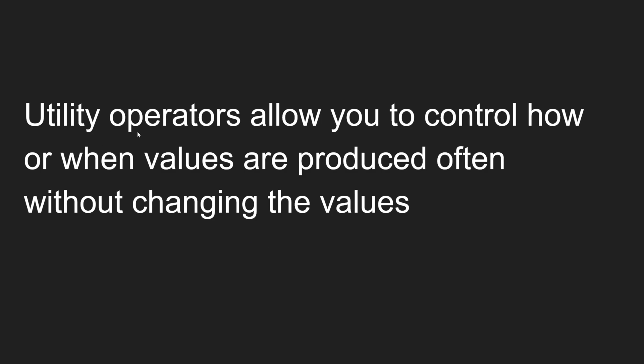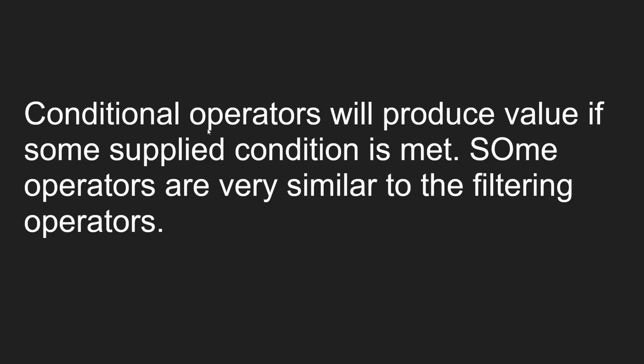Utility operators allow you to control how or when values are produced. When an observable is sending values, utility operators control the flow — they delay the data, so it won't be sent to the subscriber immediately. They send the data after some time without changing the values. Conditional operators are similar to filtering operators — they will only emit a value if a supplied condition is met.